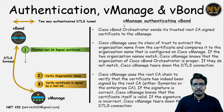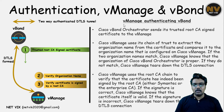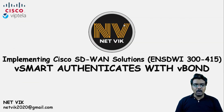Always remember: authentication happens in both directions. Only when both directions are successful do the dateless tunnels get formed. Even if one direction fails, the dateless tunnel will not be formed. Now let's see how vSmart and vBond authenticate between them.